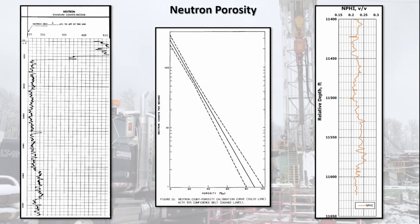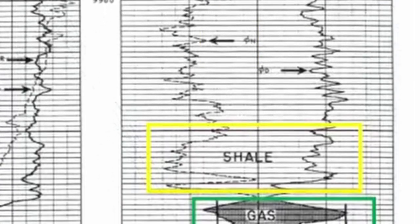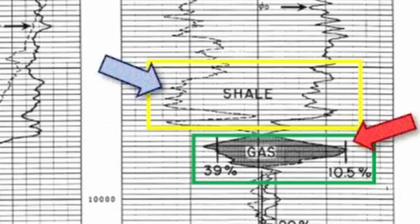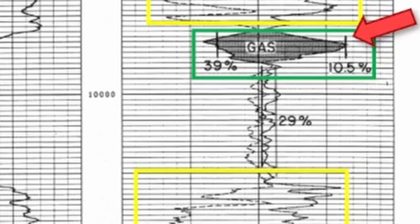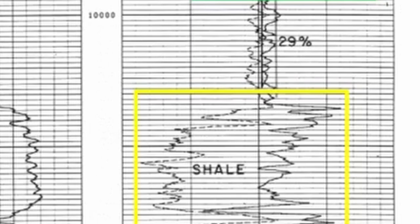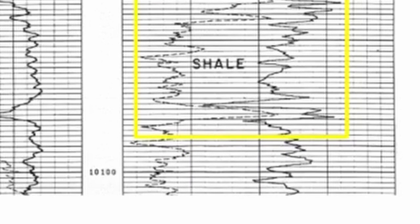Neutron porosity logs record the neutron response from hydrogen atom collision within the formation in counts per second. With environmental calibration and correction, modern logs can be translated directly to percent fluid-filled porosity. Readings can be affected by gas in the formation and its shale content — gas displays lower porosity, and shale shows a higher porosity than the true value. Clay can also cause unreliable readings due to pockets of water that do not account for secondary porosity. When used in combination with formation density logs, these areas can be identified with more certainty.